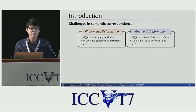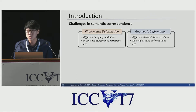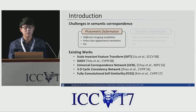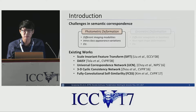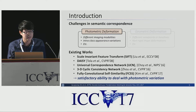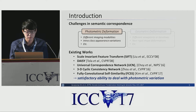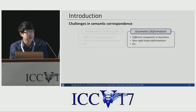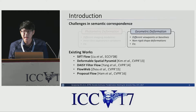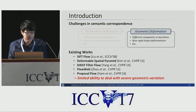Recently, a number of methods have been proposed to handle photometric and geometric variation. In terms of photometric variation, methods using deep convolutional neural networks show satisfactory performance. However, in terms of geometric variation, existing methods provide only limited ability to deal with severe geometric variation.